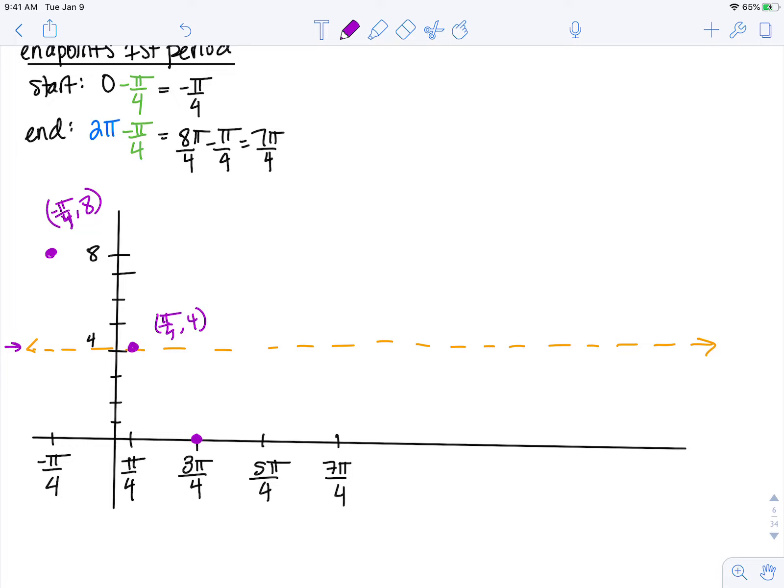Then it's going to go back up to my 0 axis, which is actually at 4. So this is 5 pi over 4, 4. And then we're going to go up to the top here, which is going to be 7 pi over 4, 8.